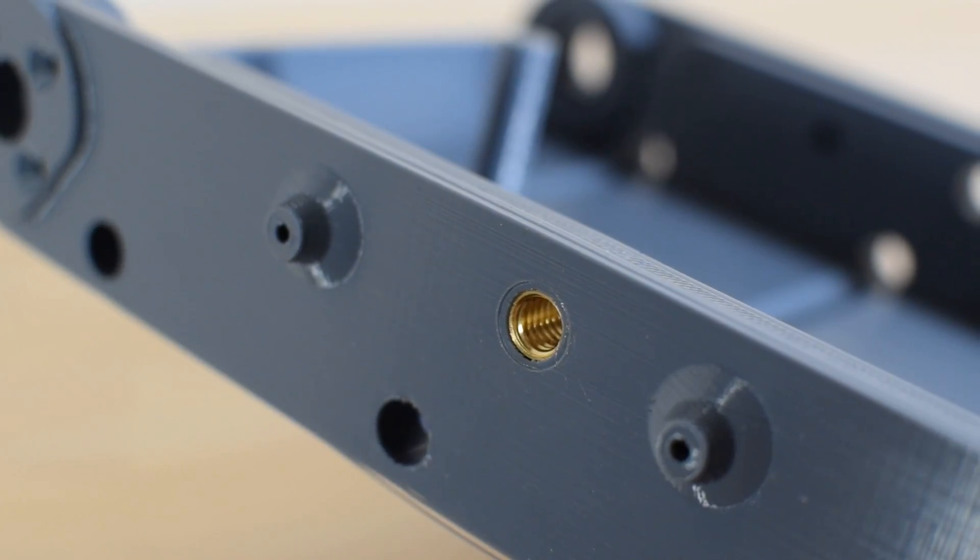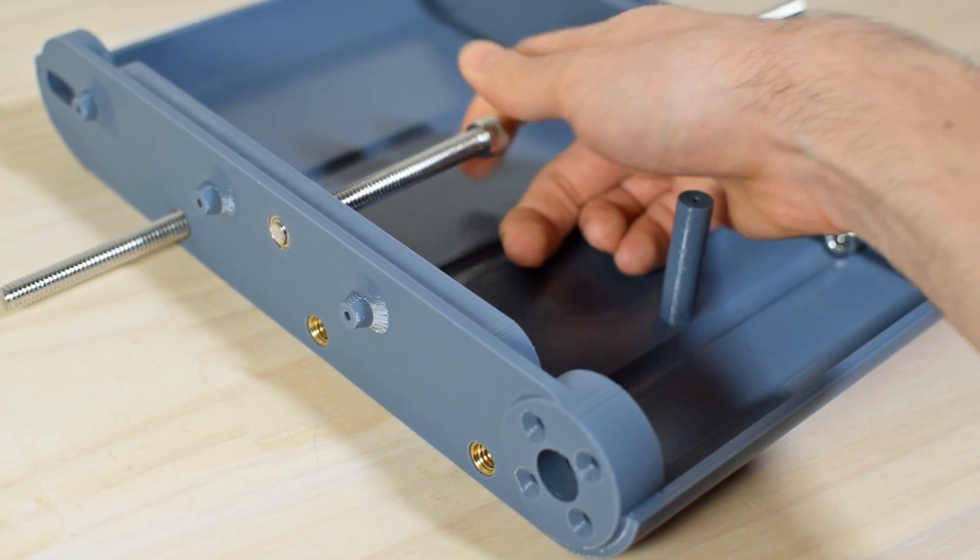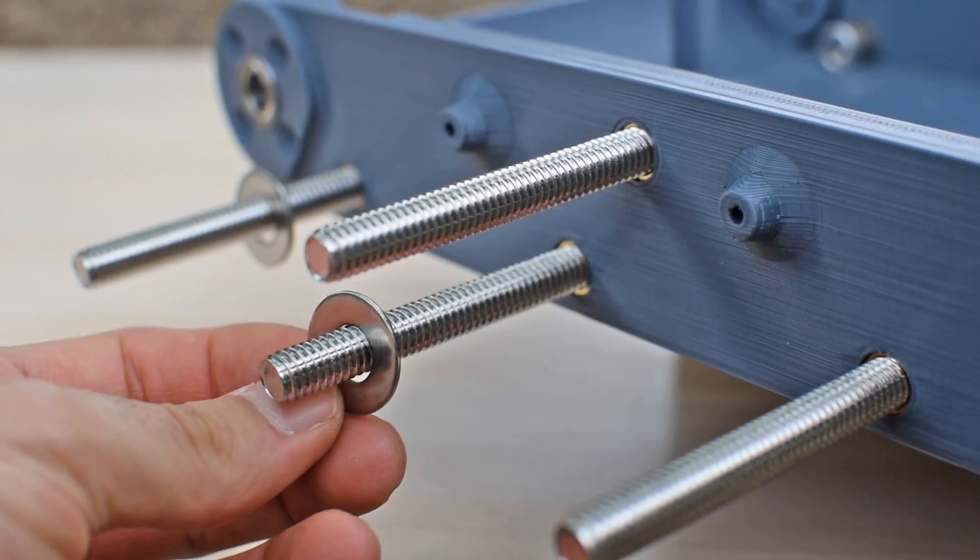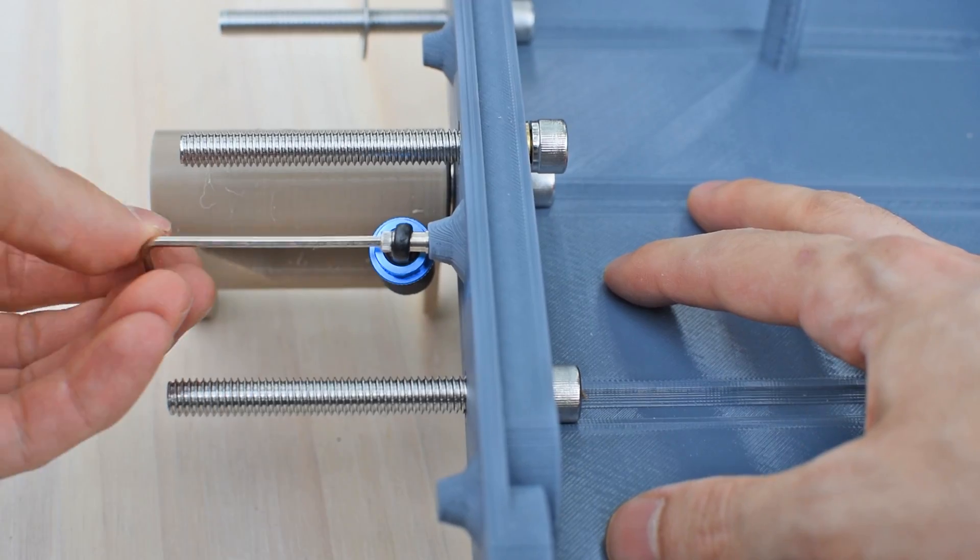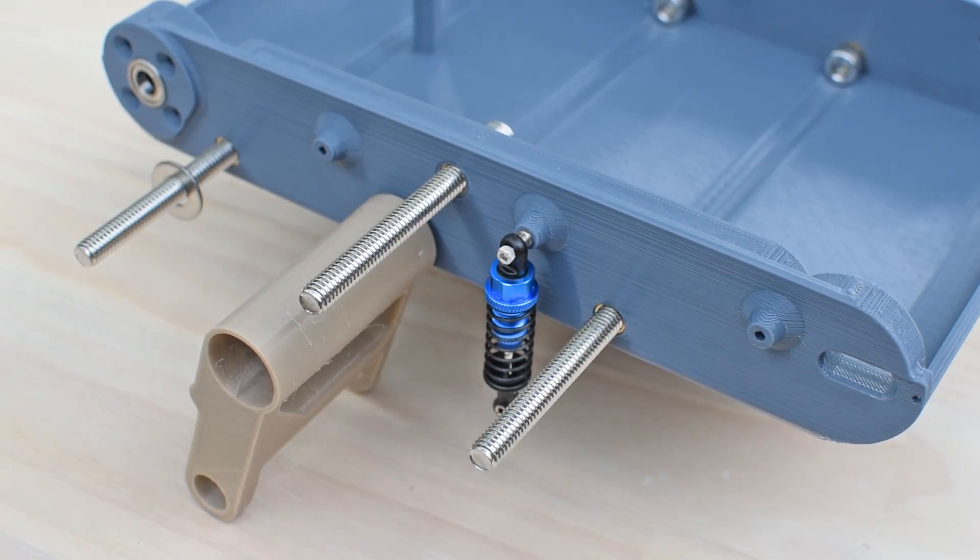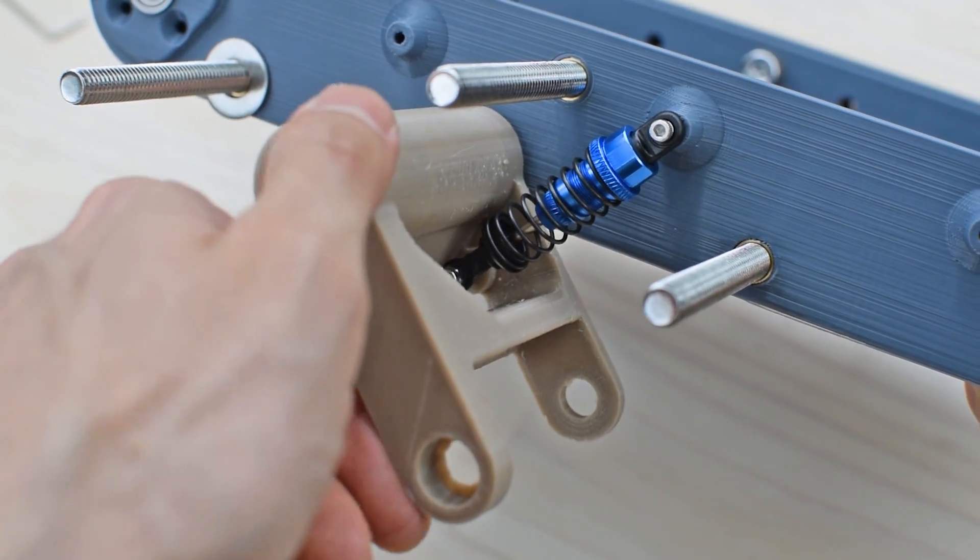I sank in my threaded inserts and attached the bolts that hold the rocker arms to the sides of the chassis. Shock absorbers add necessary suspension, and every rotating part is outfitted with bearings.